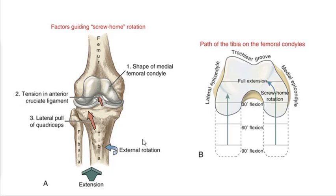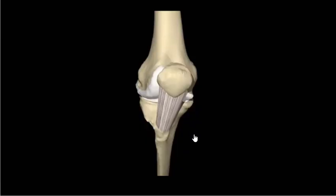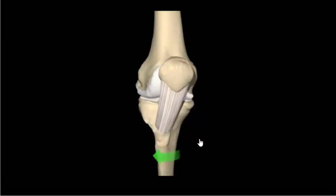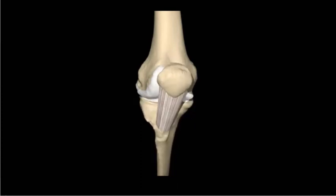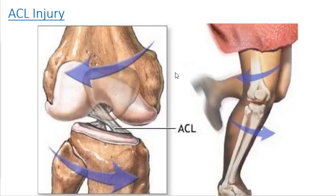There's a video here that shows that little bit of lockout — that little bit of external rotation — as a one-second loop. So we talked about the Q angle and the unhappy triad, and we'll talk more about that in this lecture regarding the ACL and the injuries that happen. ACL injuries are very, very common in athletes.